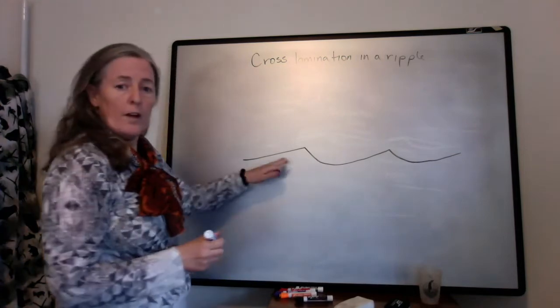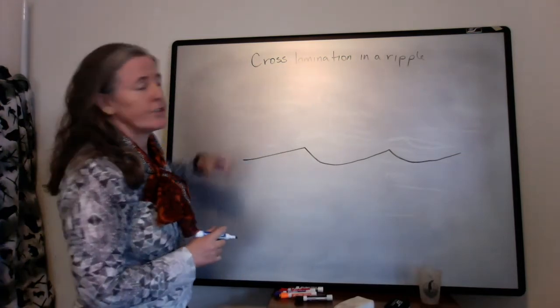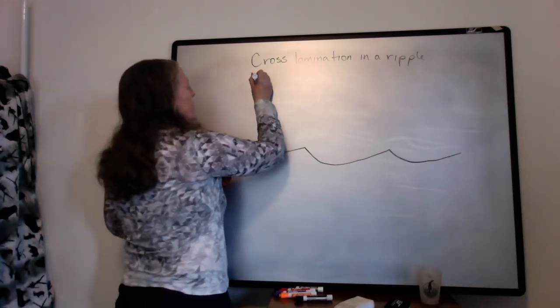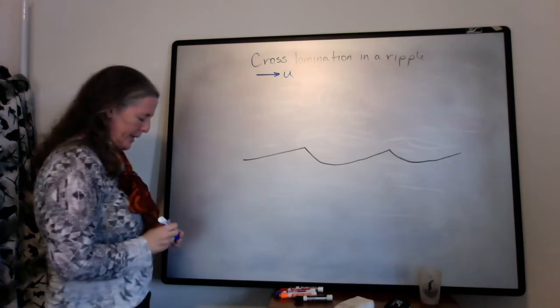Okay, so we have our ripple here, and I want to talk about how cross lamination forms in the ripple itself. So we have our flow speed, as always, going to the right here.